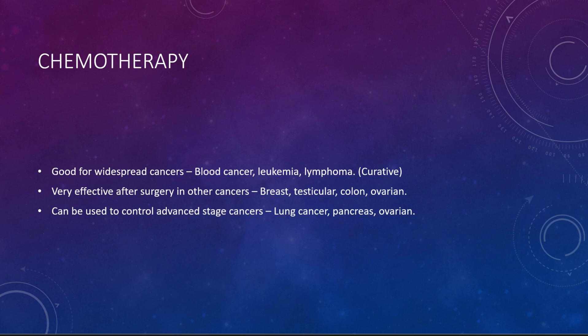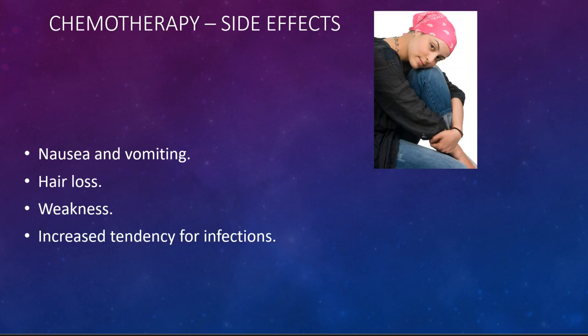It is widely believed that chemotherapy causes a lot of side effects. It is true that all medical treatments have side effects — like treating a patient with typhoid or blood pressure. Similarly, there will be side effects with cancer treatment as well. The major side effects specific to cancer chemotherapy are nausea and vomiting, loss of hair, weakness, increased tendency for infections, and anemia.